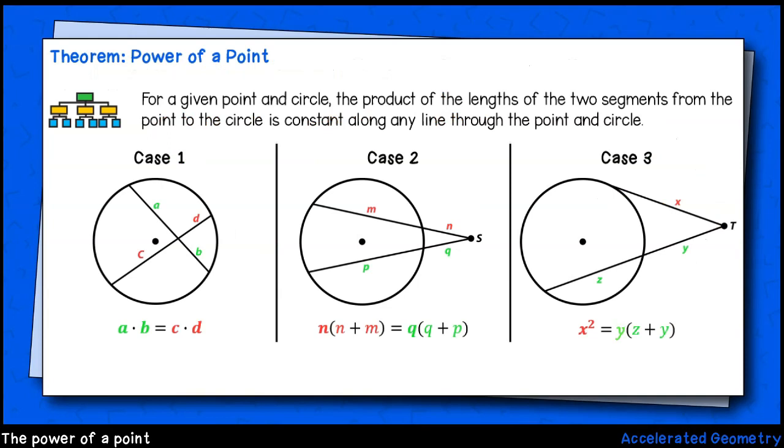The theorem that we just discovered is called the power of a point. For a given point and a circle, the product of the lengths of the two segments from the point to the circle is constant along any line through the point and circle. We just looked at an example of case 1. Pay close attention to cases 2 and 3, which involve multiplying the outside segment by the sum of the inner and outer segments. In case 3, since there is a tangent line in only one segment, the segment x is multiplied by itself to give x squared. For the secant line, it's still the outer segment times the sum of the inner and outer segments. That'll be y times z plus y.